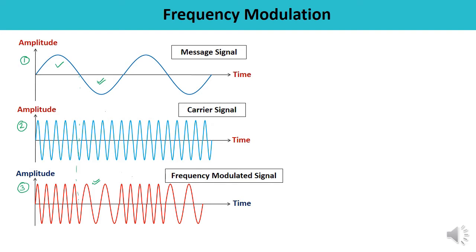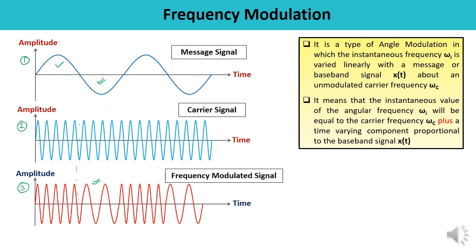Frequency modulation is a type of angle modulation where the instantaneous frequency, denoted by omega_i, is varied linearly with the message or baseband signal about an unmodulated carrier frequency omega_c. This can be expressed as: omega_i = omega_c + kf * x(t), where kf is a proportionality constant known as the frequency sensitivity of the modulator.